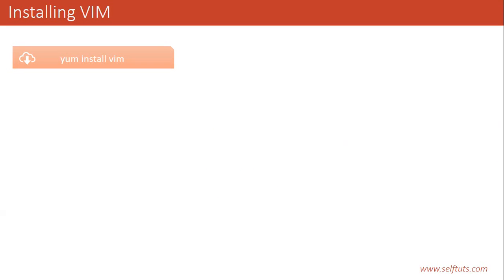When we install Vim inside our system and try to use it, Vim depends upon two important things. The first thing is the .vimrc file.